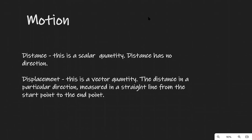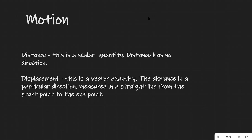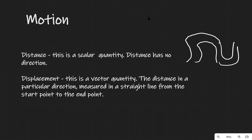Let's start off with distance. Distance is a scalar quantity, so this means that it has a magnitude but not a direction. For instance, if we had a road and the length of the road along this line was five kilometers, then this would be our distance.